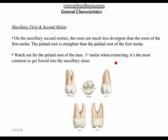Watch out for the palatal root of the maxillary first molar during extractions. Since it's the largest and longest root, it is most commonly in close proximity to the maxillary sinus. You do not want to perforate the maxillary sinus. If after an extraction you take an x-ray and see a small object between the maxillary sinus and the soft tissue, that would likely be the retained palatal root.